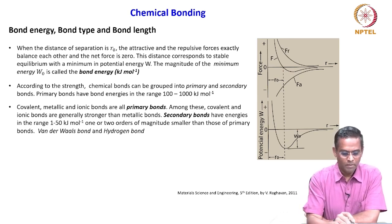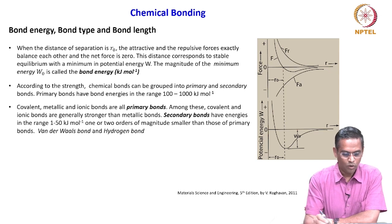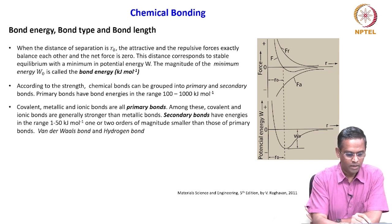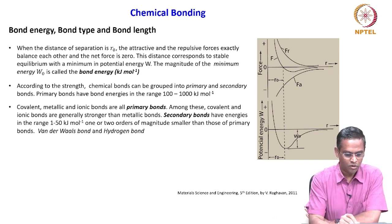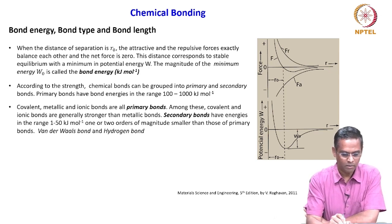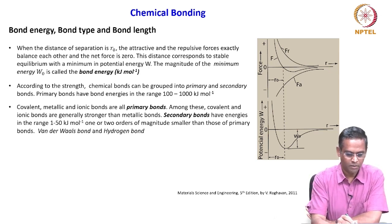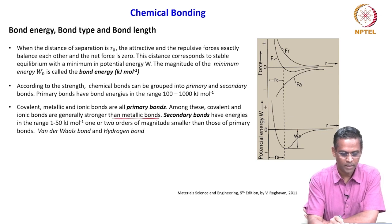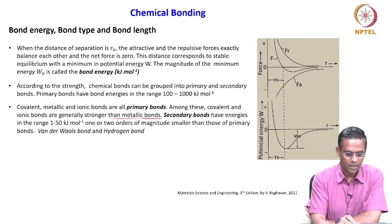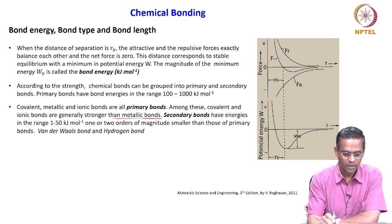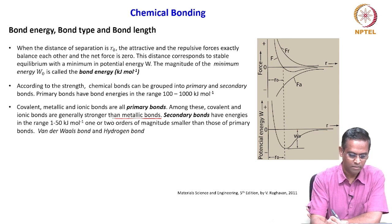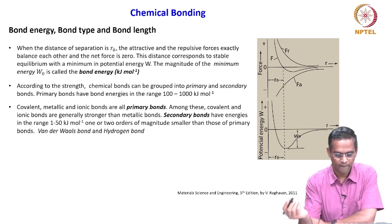Among these primary bonds, the covalent and ionic bonds are generally stronger than the metallic bonds — very important to keep that in mind.